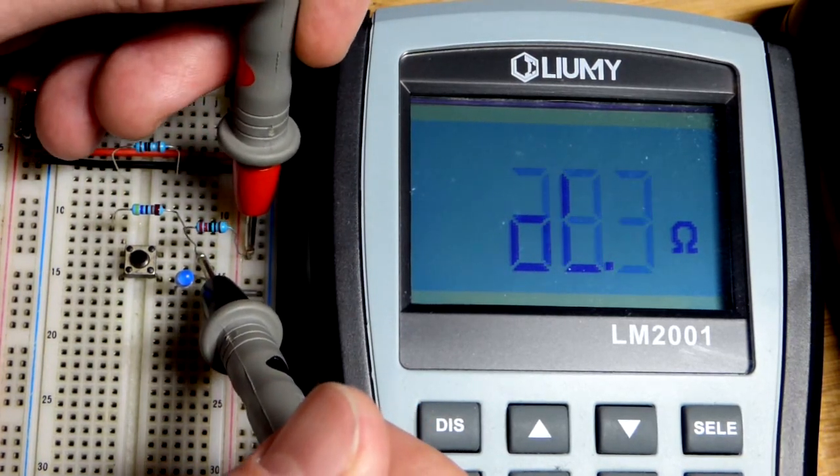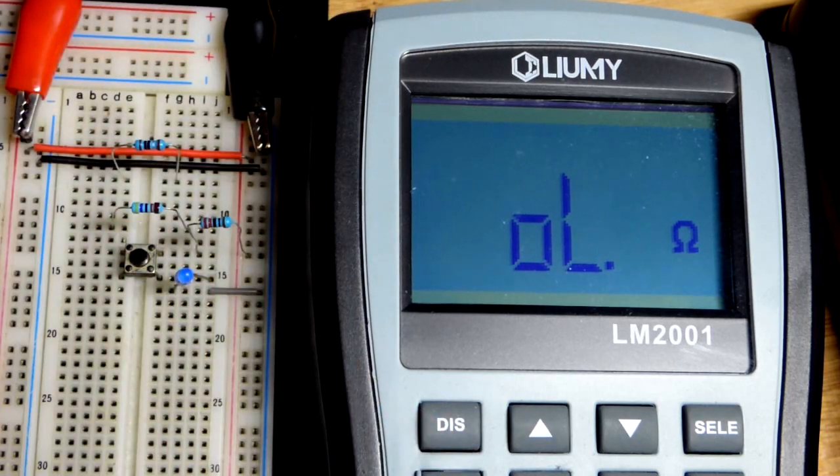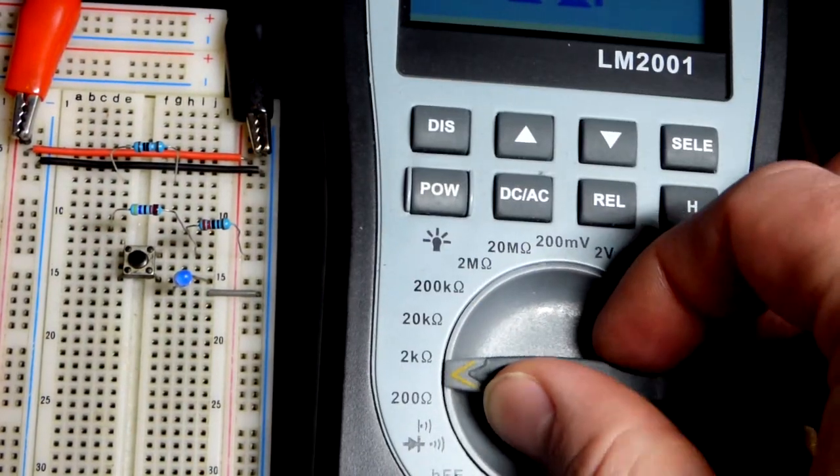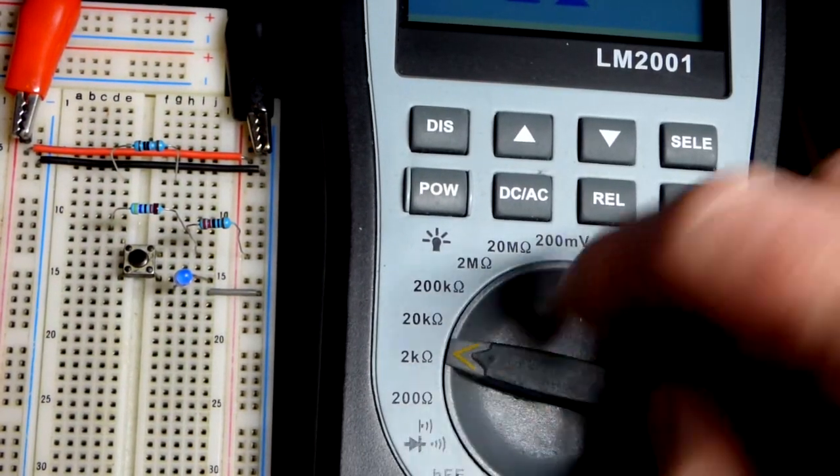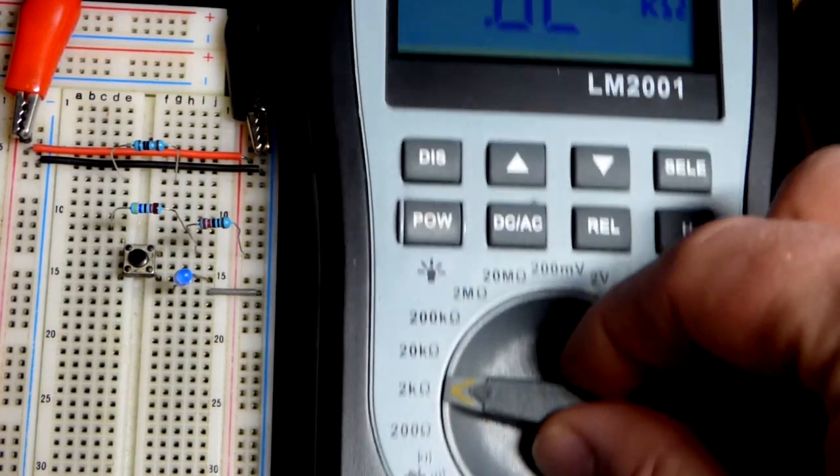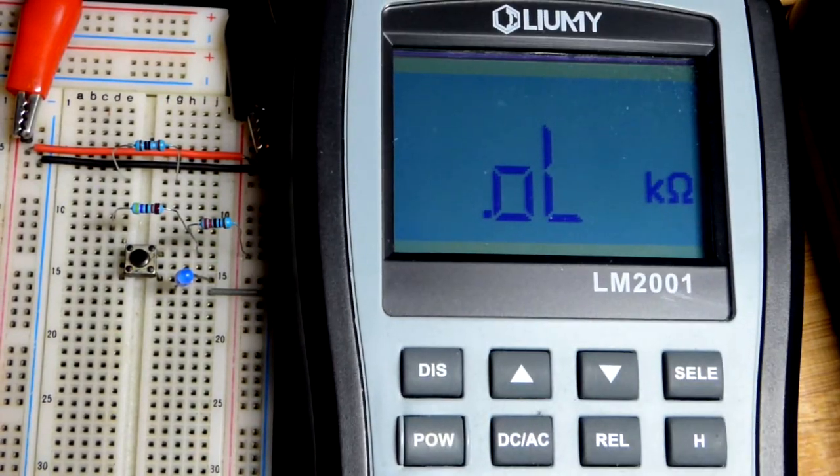I didn't change the setting. The reading is less than 200, which means the setting was too low. To get the most accurate reading, we're going to go to the next highest setting to match what the resistor is.